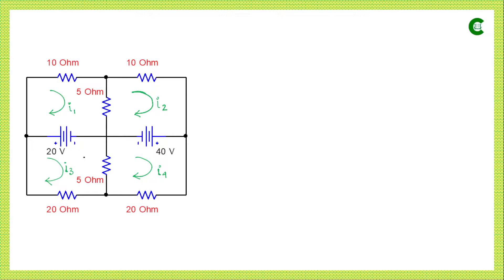In the next step we will assess all loops one by one and develop mesh equations or loop equations. In mesh analysis the basic law we use is Ohm's law: the voltage drop across any resistor equals the current through that resistor multiplied by the resistance value. While forming loop equations we need to follow a sign convention.